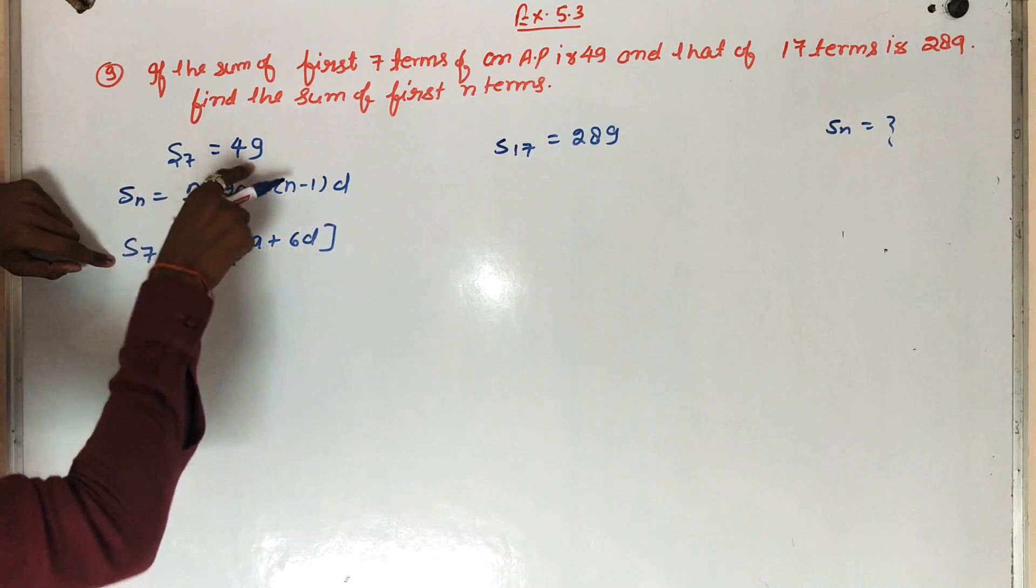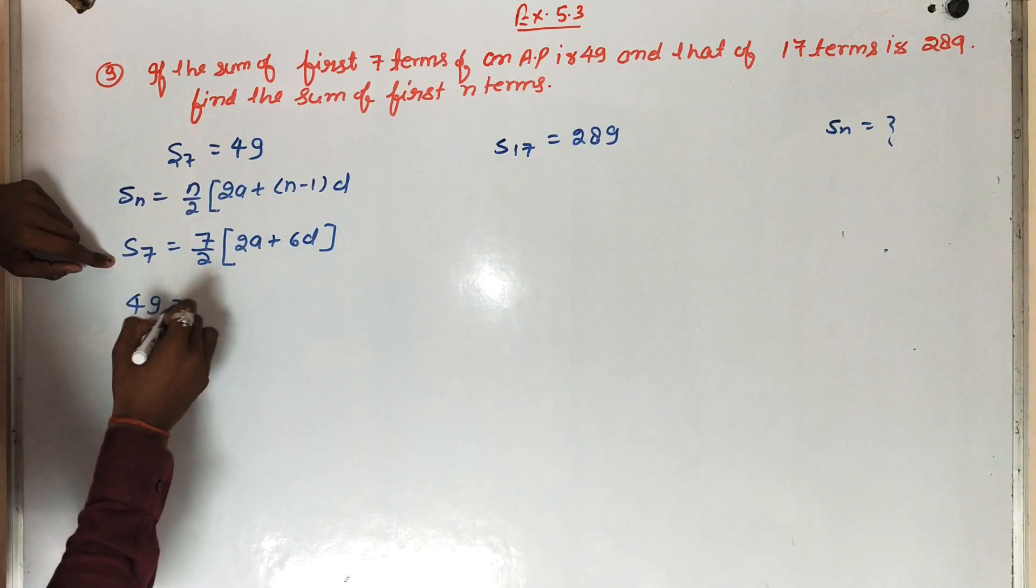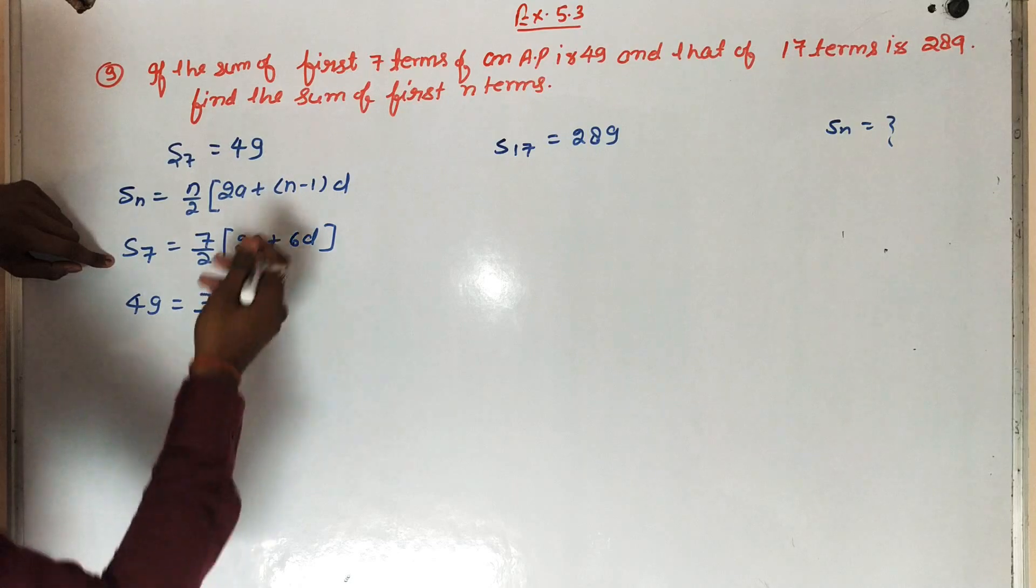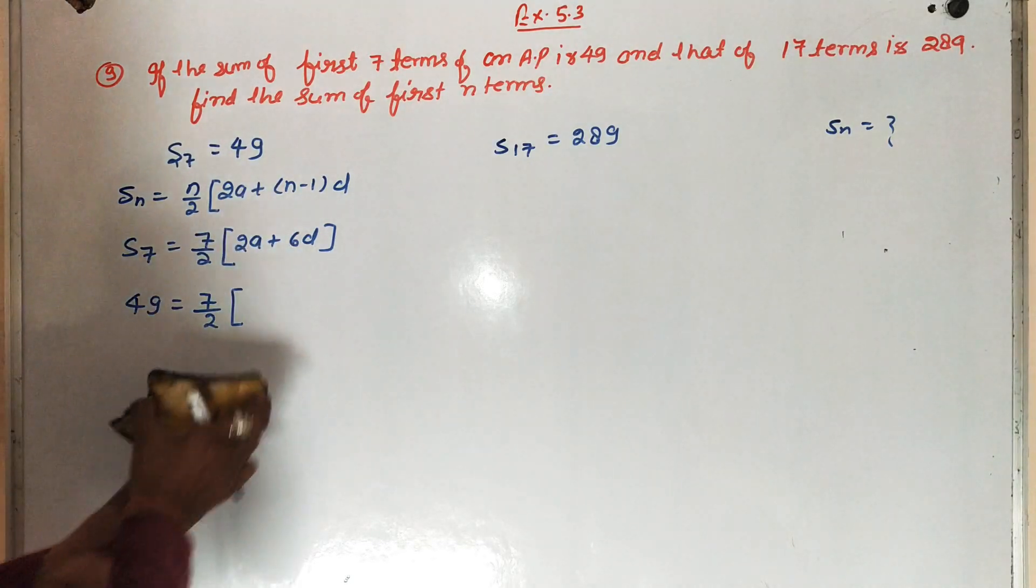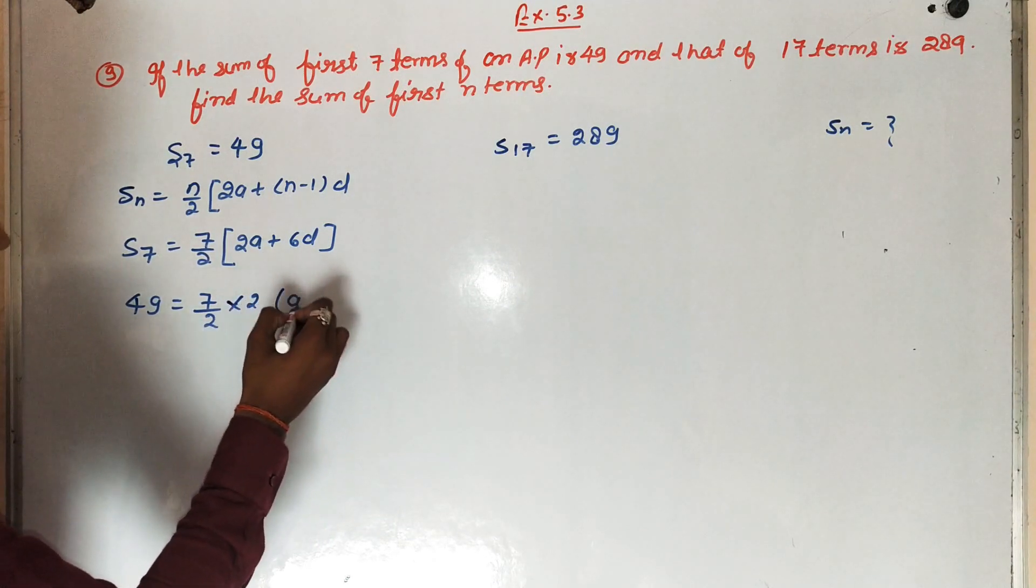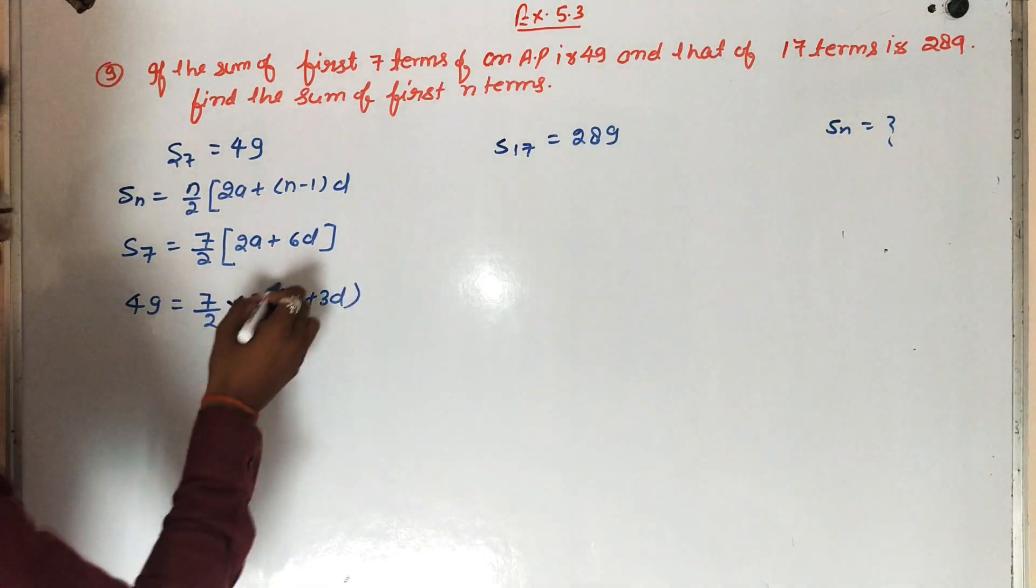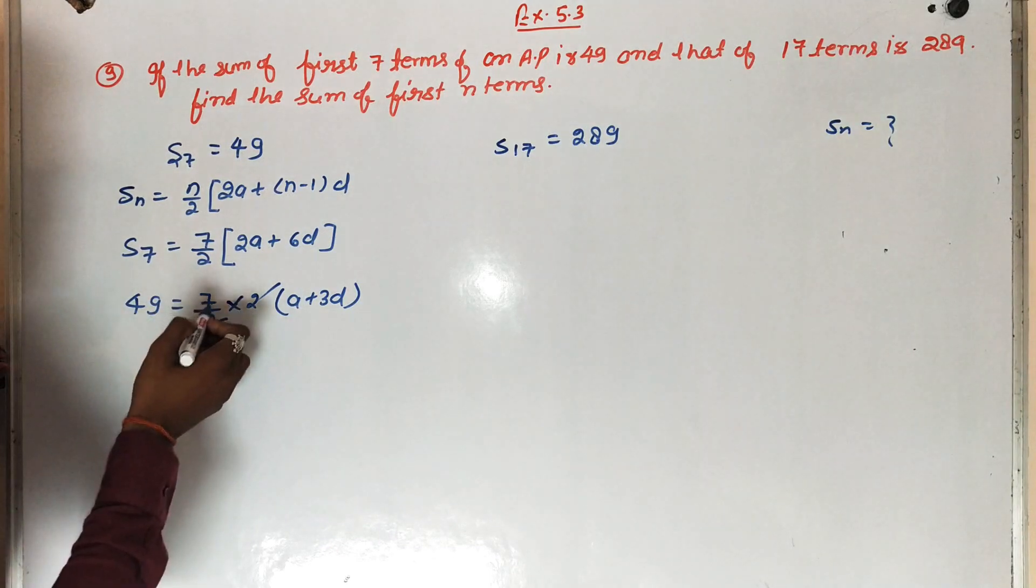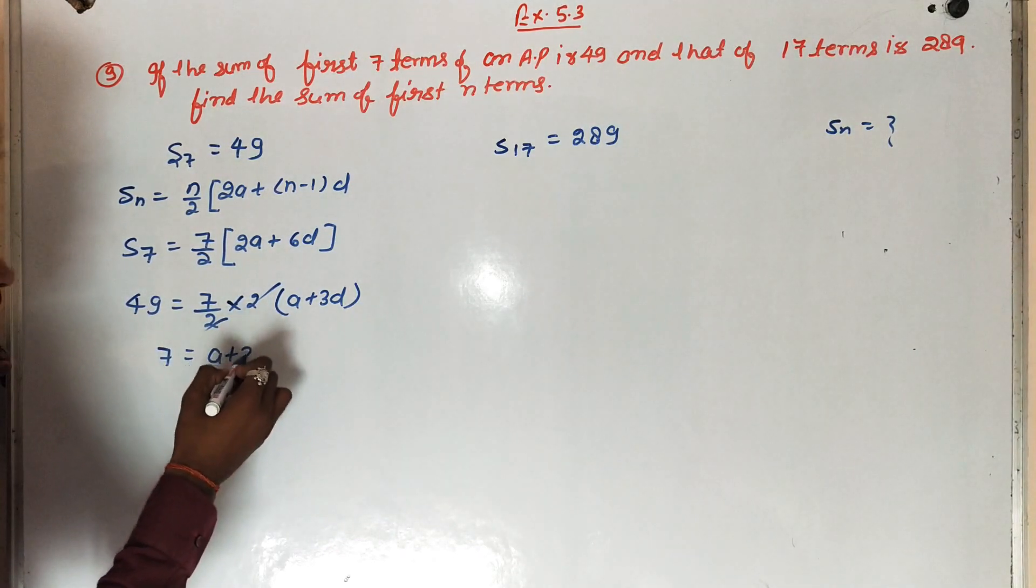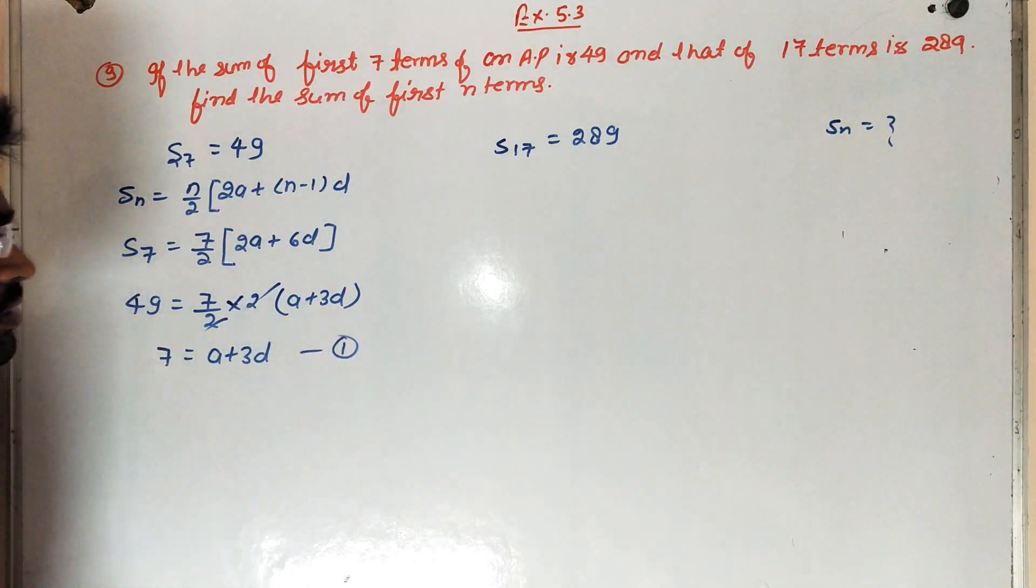Students, sum of 7 terms that is 49, 49 is equal to 7 upon 2. So sum of 7 terms, directly 2A plus 3D, equation number 1.